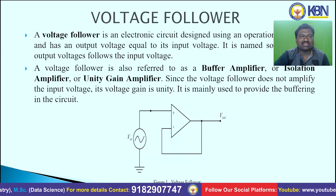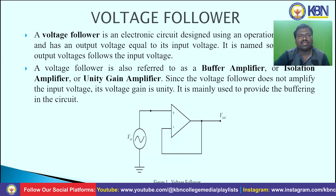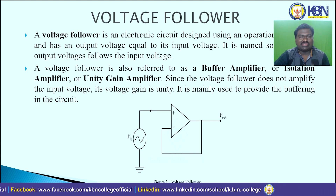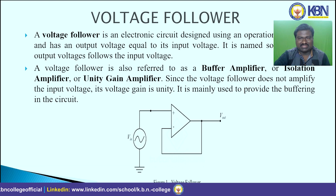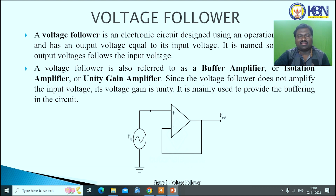Another application of the operational amplifier is the voltage follower. A voltage follower is an electronic circuit designed using an op-amp whose output voltage is equal to the input voltage — the output voltage follows the input voltage. It is also referred to as a buffer amplifier, isolation amplifier, or unity gain amplifier, since it does not amplify the input voltage and its voltage gain is unity. It is mainly used to provide buffering. In the circuit, the non-inverting terminal is connected to the input source and the inverting terminal is fed back from the output voltage.